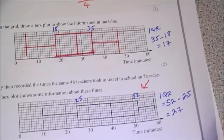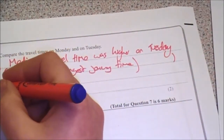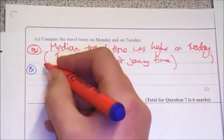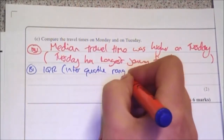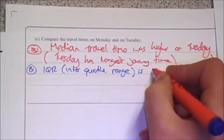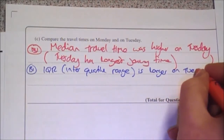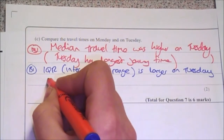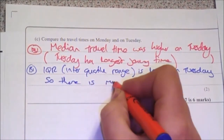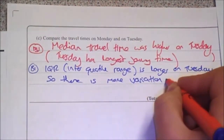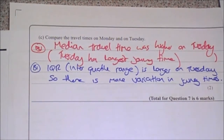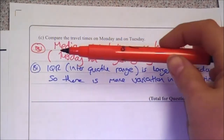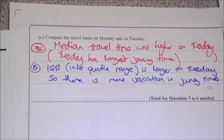On average, Tuesdays were more spread out. For the second mark, I'm going to say that the inter-quartile range is larger on Tuesday, meaning there is more variation in journey times. And there are your two marks. You will not get two marks if you make the same comparison twice — for example, stating both that the median is higher on Tuesday and that the maximum is higher on Tuesday would only count as one mark.